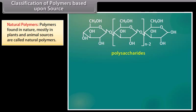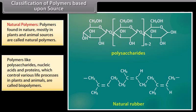Classification of polymers based upon source has three subcategories. Natural polymers are found in nature, mostly in plants and animal sources. For example, polysaccharides, proteins, nucleic acids, and natural rubber. Polymers like polysaccharides, nucleic acids, and proteins, which control various life processes in plants and animals, are called biopolymers.